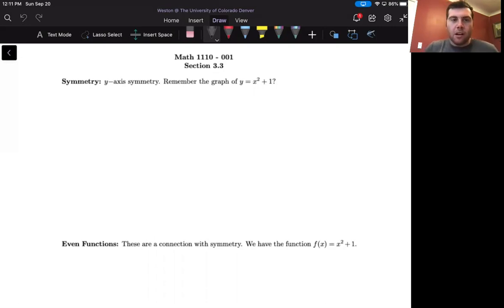We'll start off with discussing some symmetry that we've talked about before. Remember, a graph has y-axis symmetry if it looks the same when you fold it over the y-axis. The graph of y equals x squared plus 1 is one such function that has y-axis symmetry.